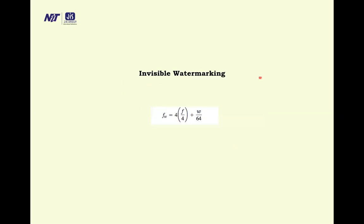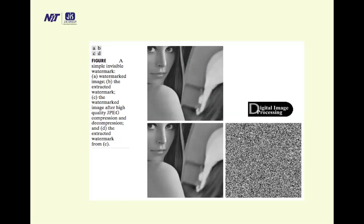In case of invisible watermarking, these are the formulas that will be used. This is the invisible watermarking, this is the original image and this is the watermark. After combining this is the final image, but these two images looking the same. So how it is possible? This is invisible watermarking. But if we want to extract this, this is the extracted watermarking.